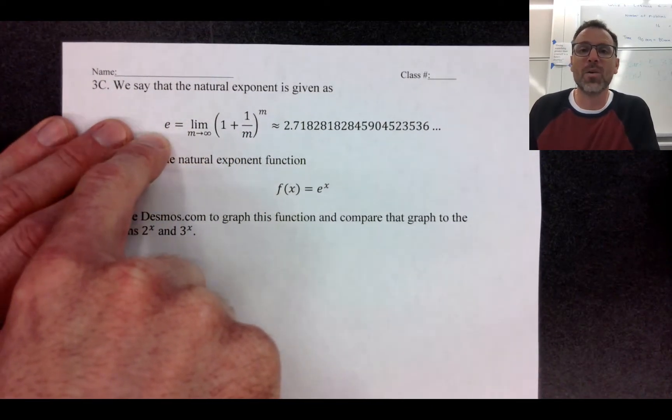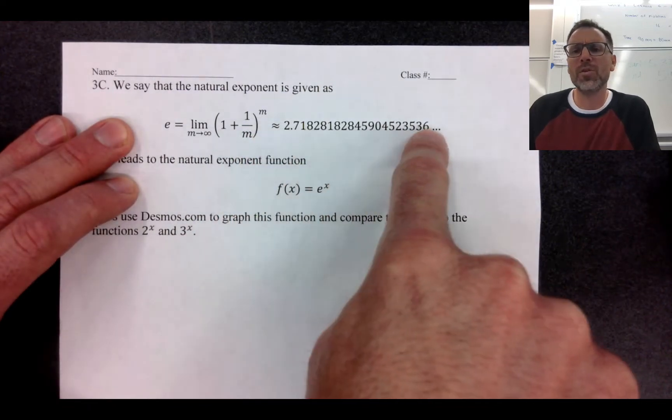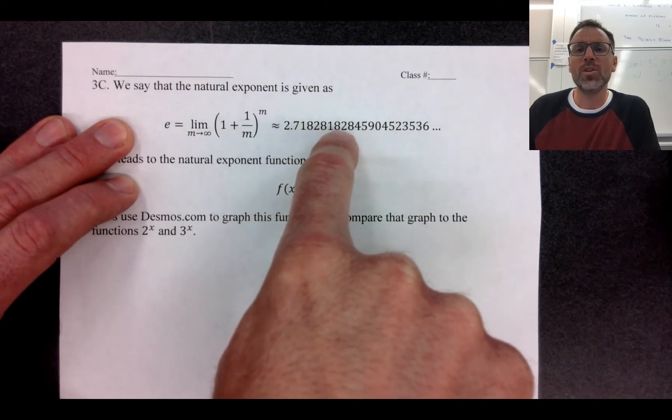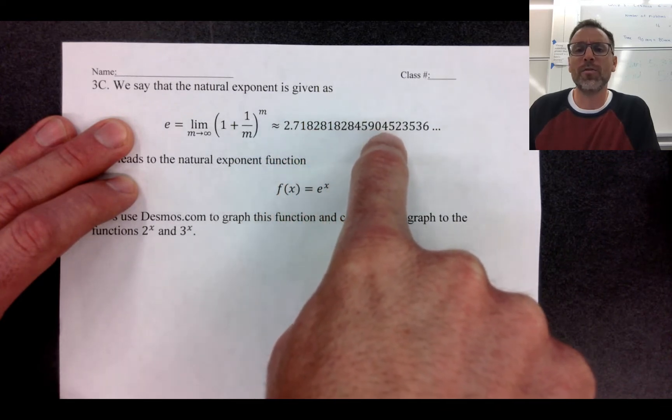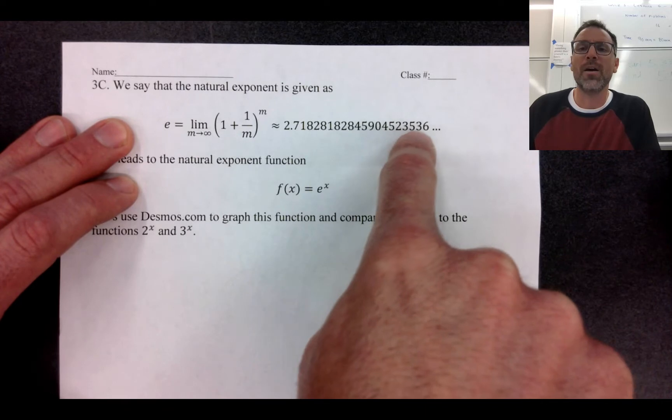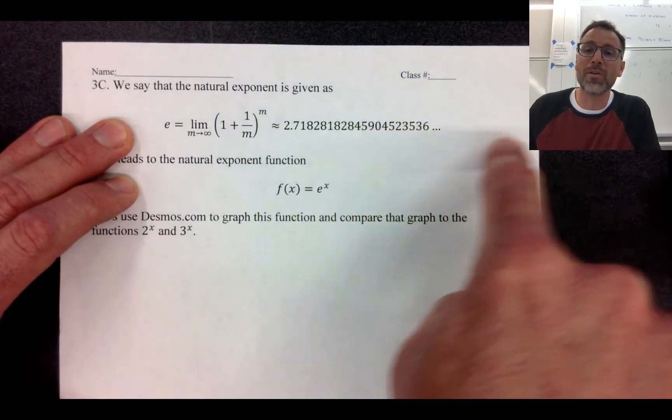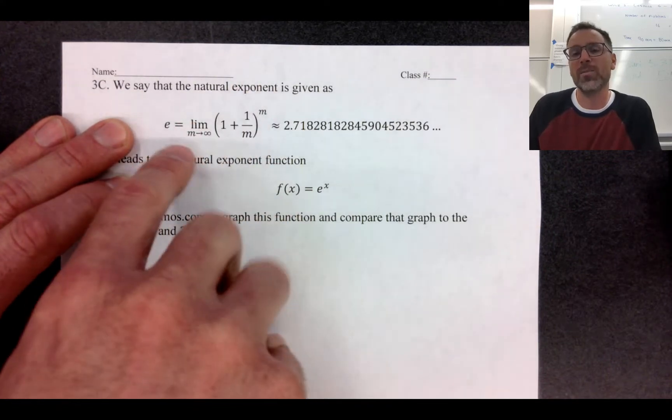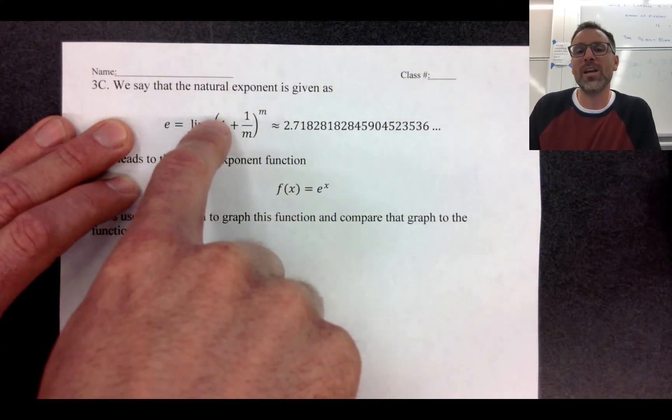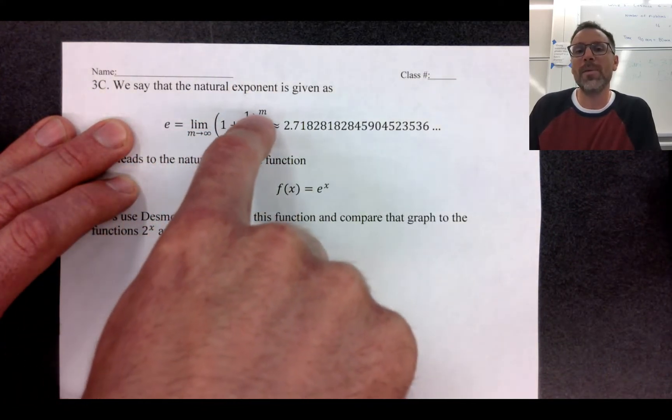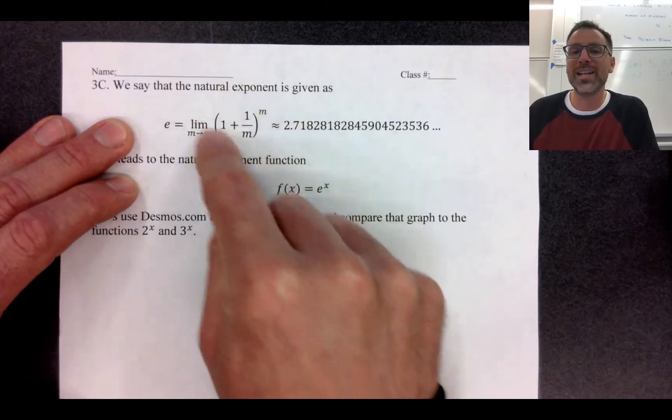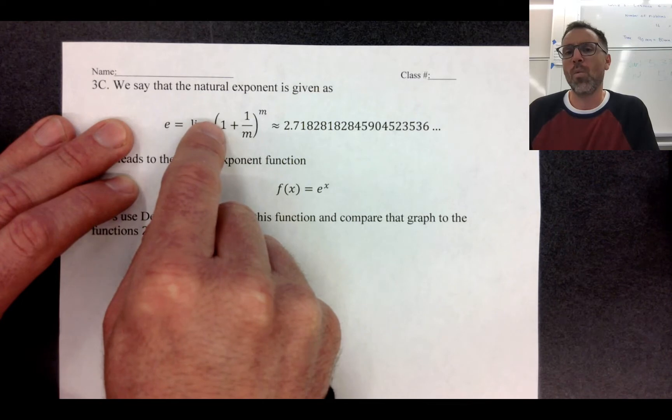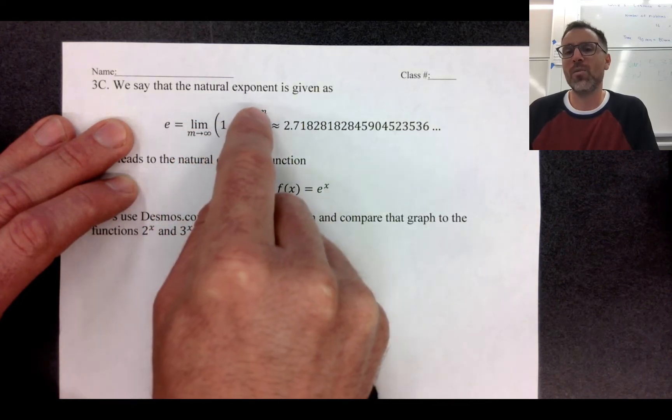Remember E is a mathematical constant. The first few digits of the decimal looks like 2.71828182845904523536 and so on. This goes on forever and it never repeats and the calculus-based definition is limit as m goes to infinity of 1 plus 1 over m to the m. This kind of looks like that compounding principle, right? You've got the 1 plus some interest rate raised to a power.